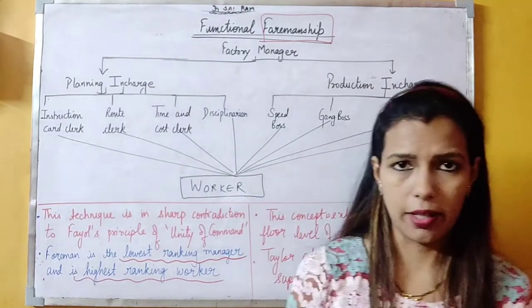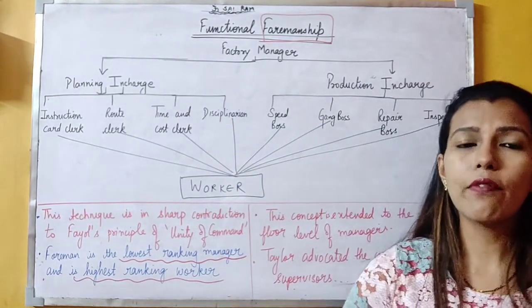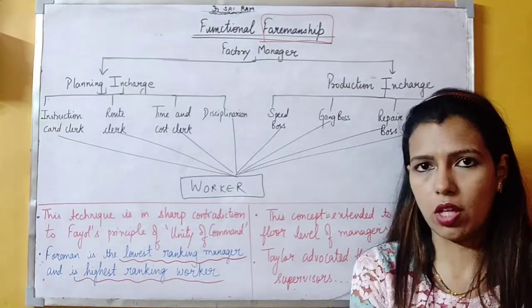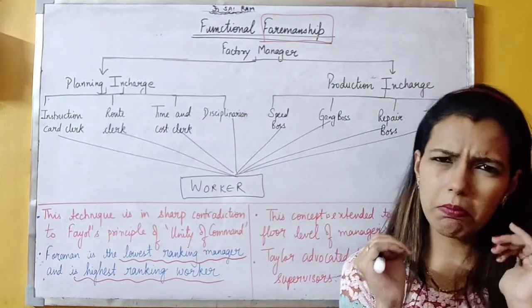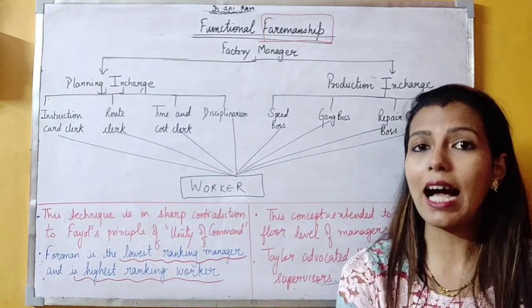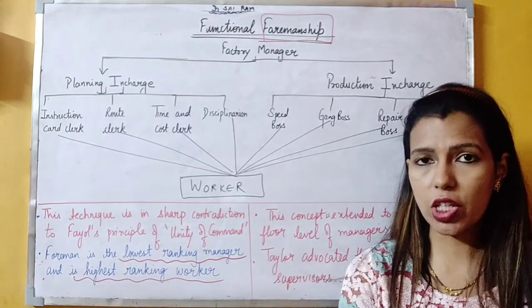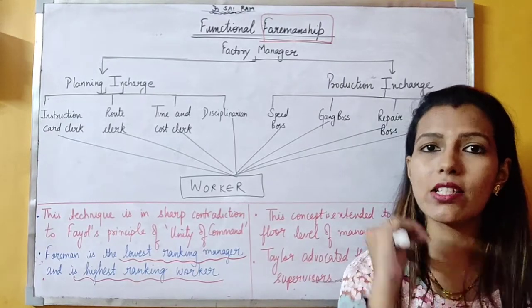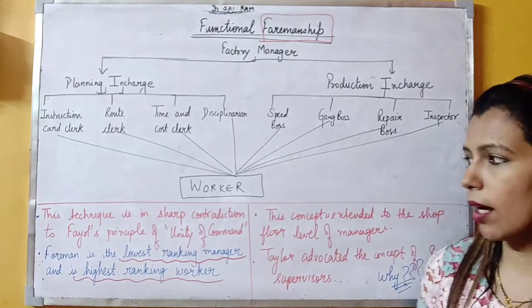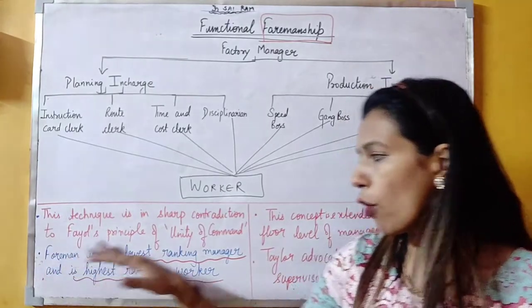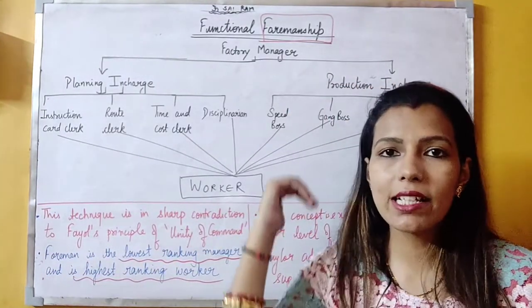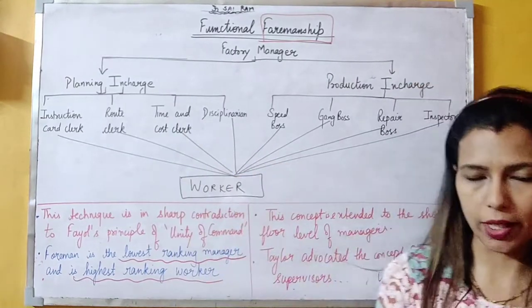You can understand it like a class monitor. A class monitor is the lowest level management in class, but among the students, they are the highest ranking. Similarly, the Foreman is the lowest ranking manager among managers, but the highest ranking among workers.